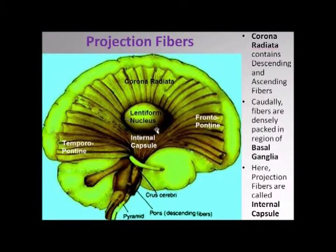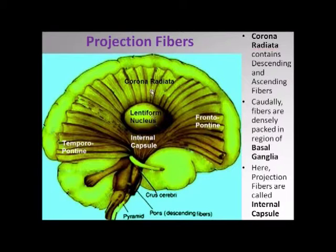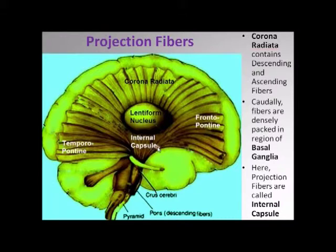I would like you to take note that this corona radiata has been indented from the lateral aspect by one nucleus here, which is referred to as the lentiform nucleus. Another important point is that this corona radiata, located just inside the gray matter of the brain — as these fibers converge caudally, they become more tightly packed, and in the region of the basal ganglia, they come to be known as the internal capsule, which is going to be the main topic for today.